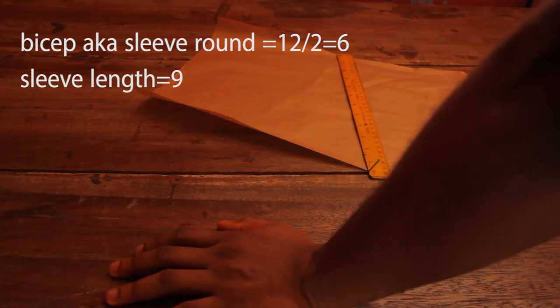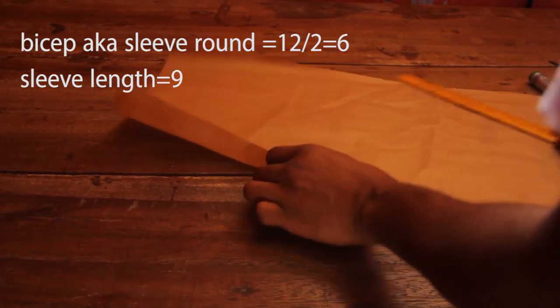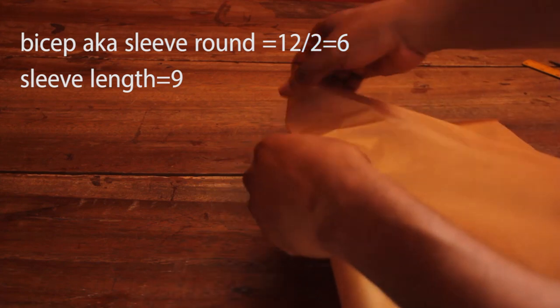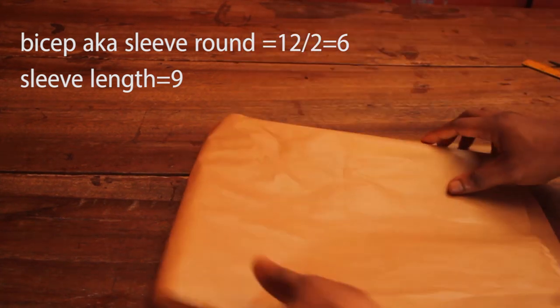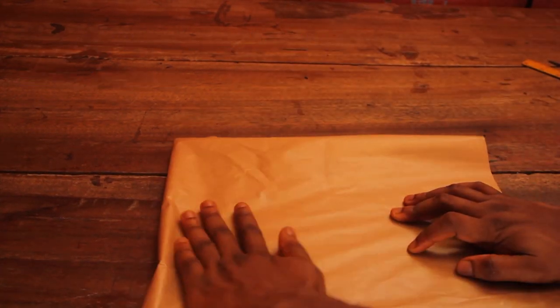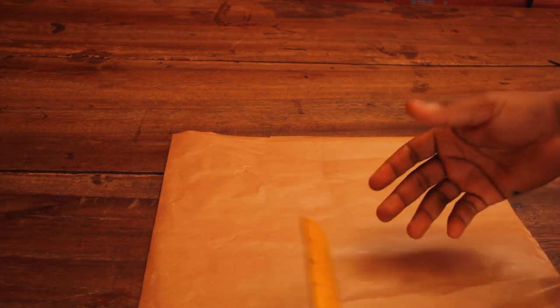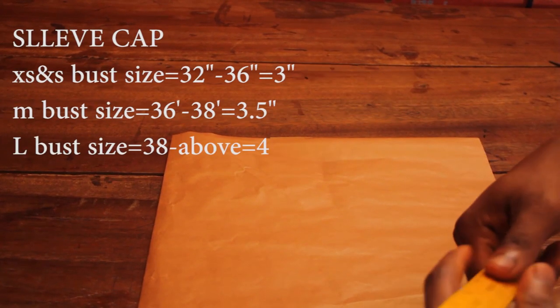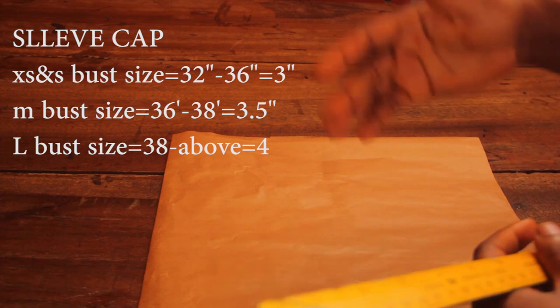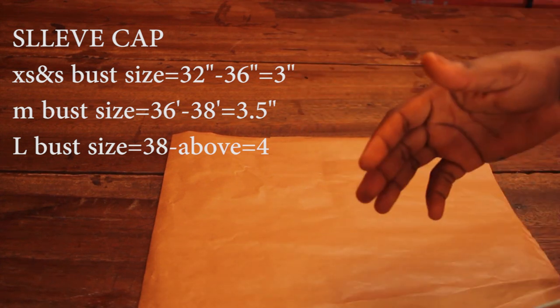These are the measurements you would need to be able to draft a sleeve. I'm folding my paper in half. Now the first thing we'll do is to drop a sleeve cap.